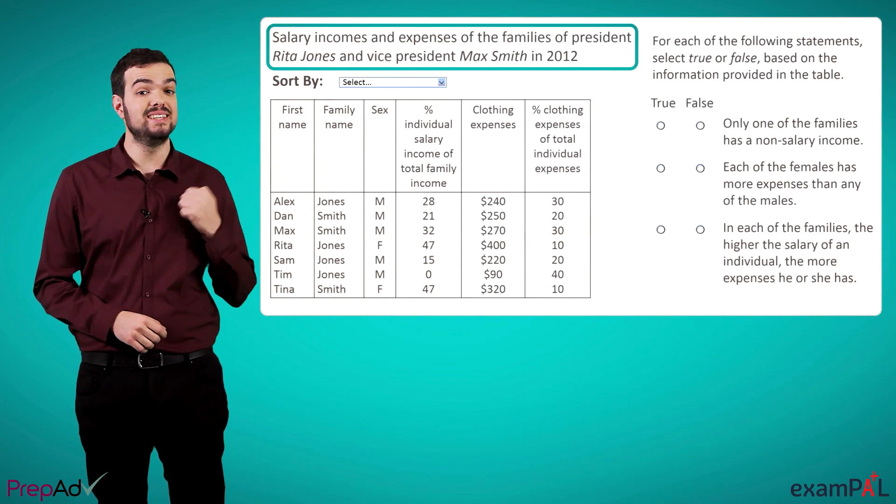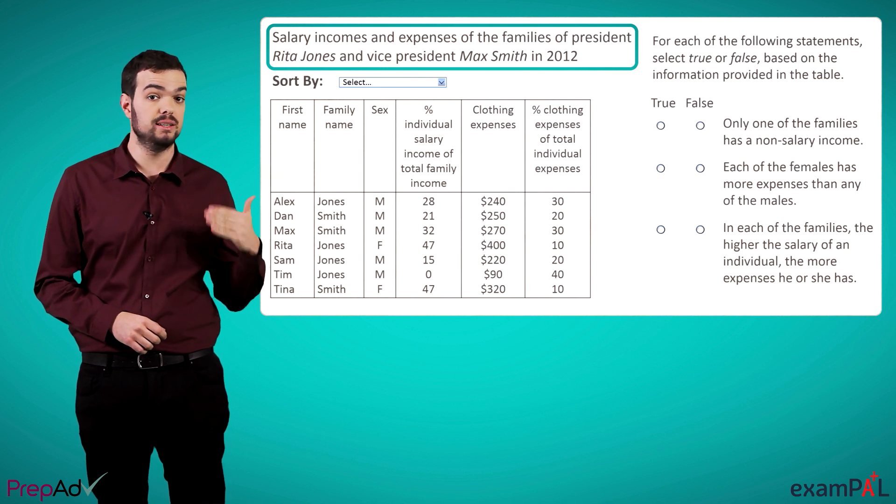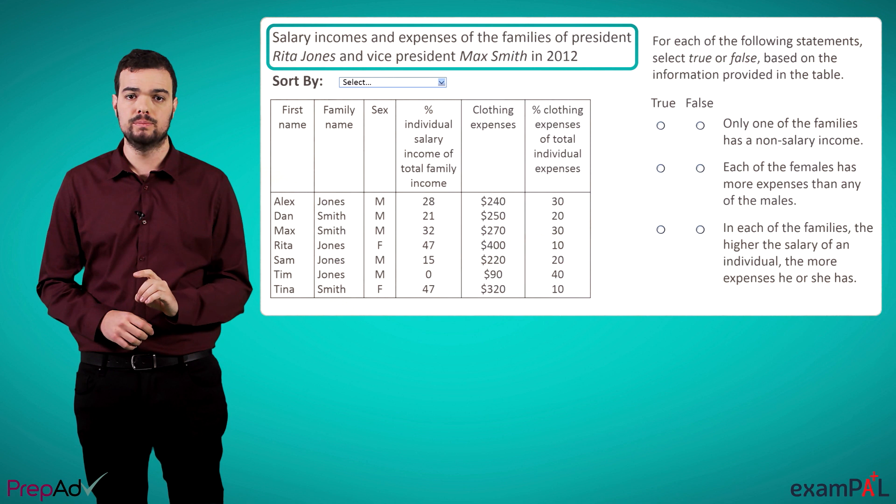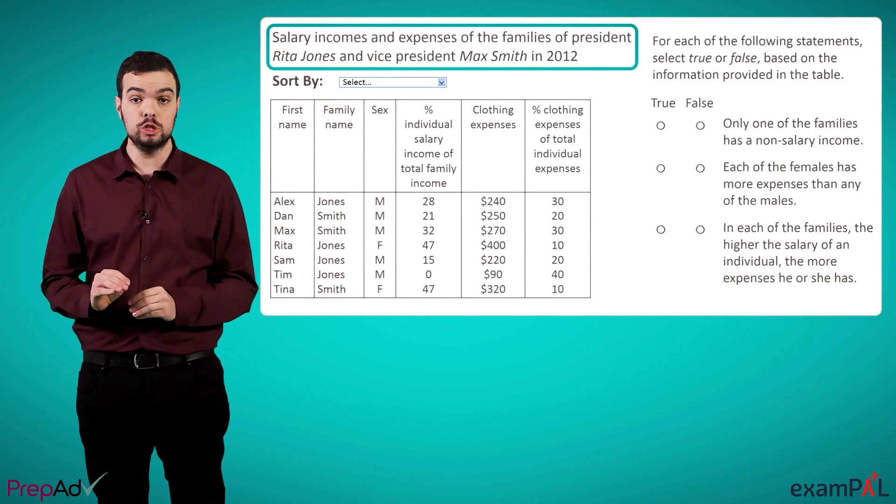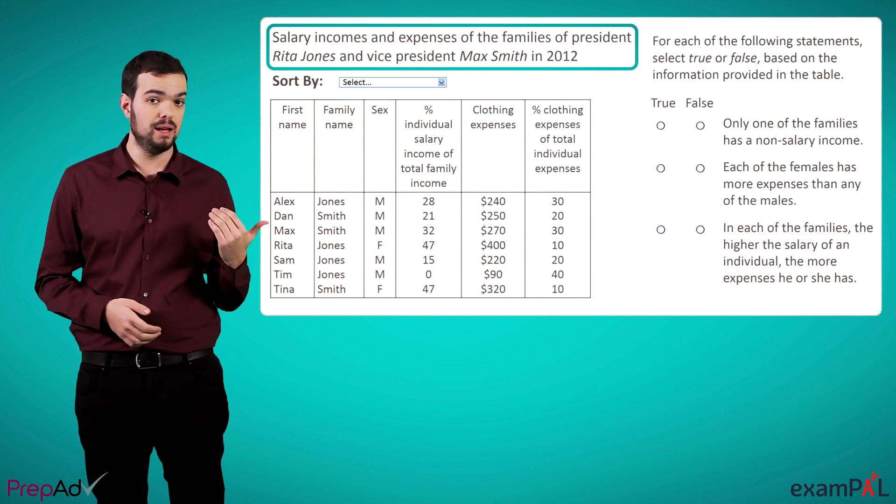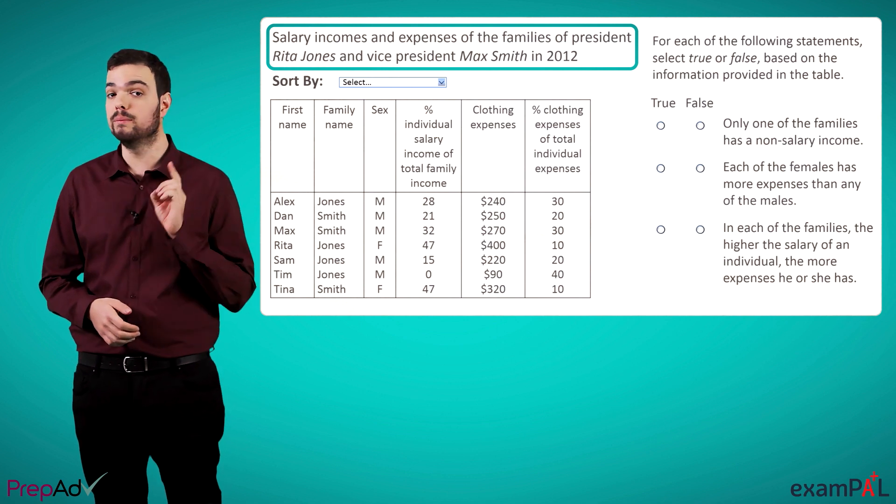For example, in this table, the title both tells us the identities of the people mentioned in the table, family members of the president and vice president, and the year for which the table presents information. Note that it also gives us important additional information about the context, such as the entire families of the president and vice president are included, which can be quite important.